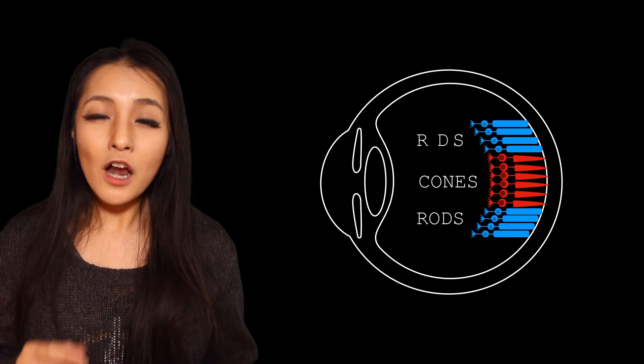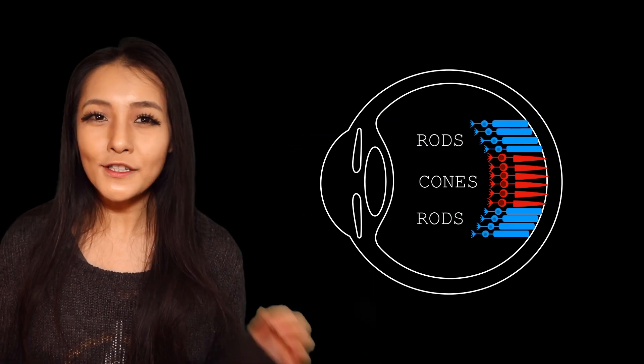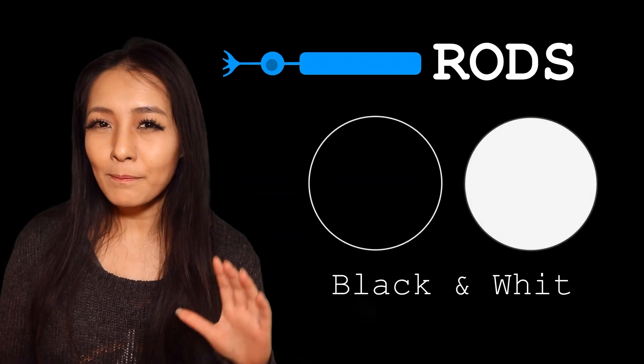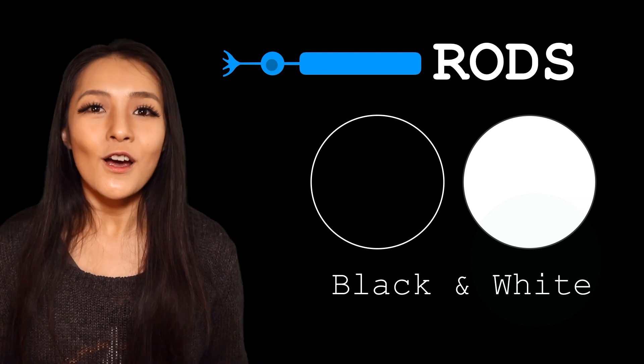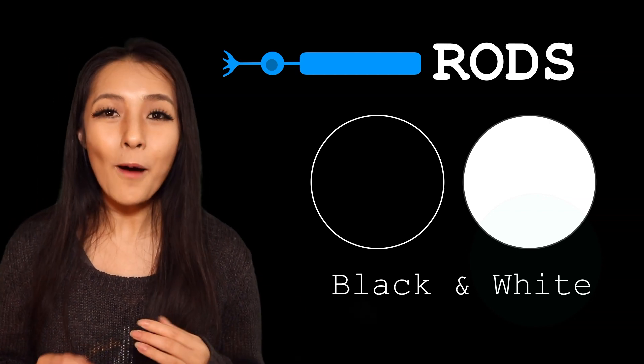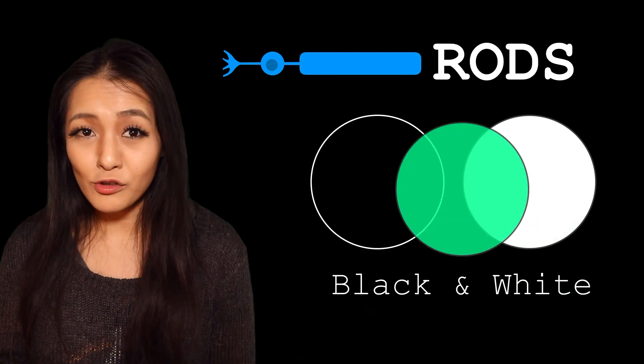Rods, on the other hand, are found far away from the centre of your retina. Rods don't see in as much detail as cones do, and they only see in black and white. But this makes them far more sensitive to light. Also, even though rods don't see in colour, they are most sensitive to blue-green light.